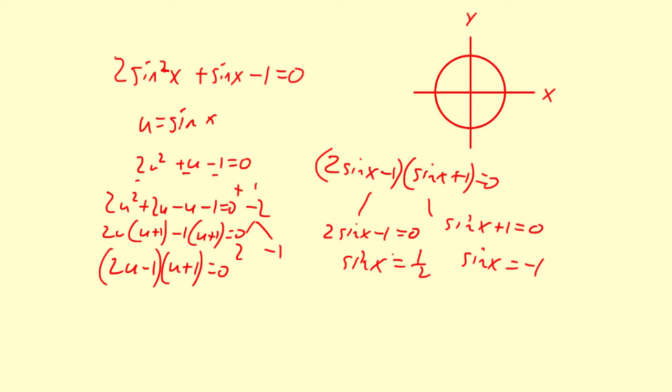So for sine x equals 1 half, the reference angle is pi over 6. But I also know that 11 pi over 6 works. That's in quadrant 4. And a sine value for negative 1, there's only one value for that, and that is 3 pi over 2.